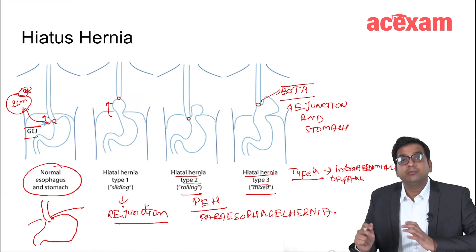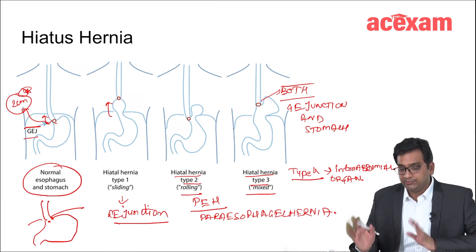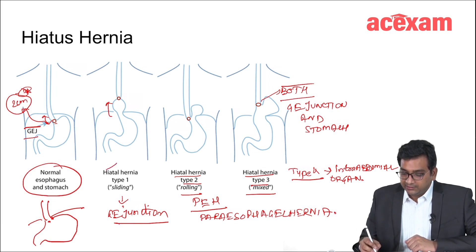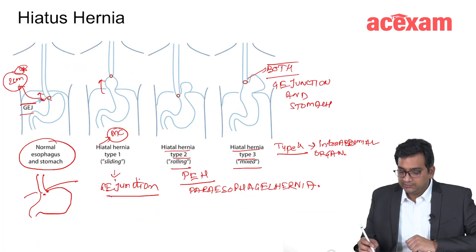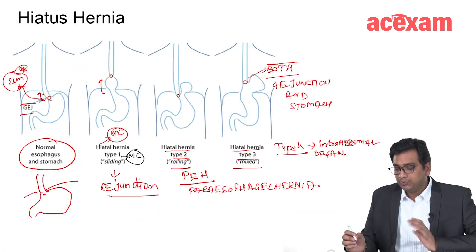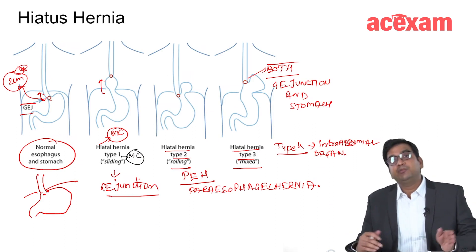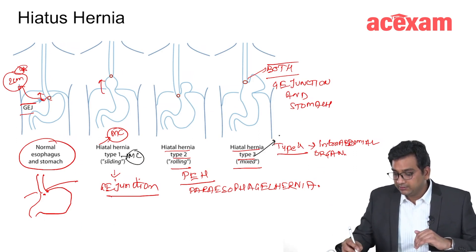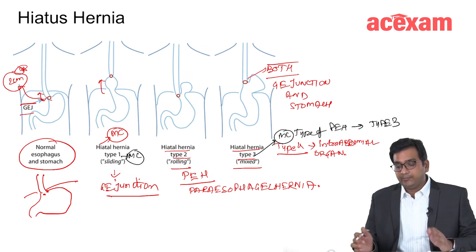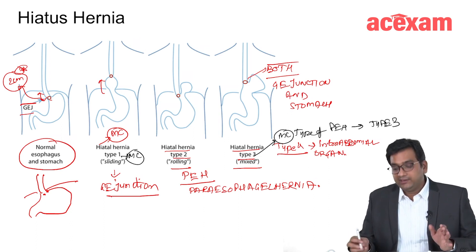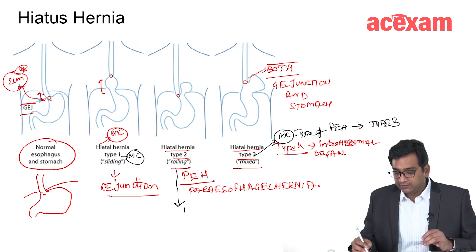What is the most common type of hiatus hernia? It is type 1 — the most common type. What is the most common type of paraesophageal hernia? It is type 3. Most common type of paraesophageal hernia is type 3. What is the true paraesophageal hernia? It is type 2.